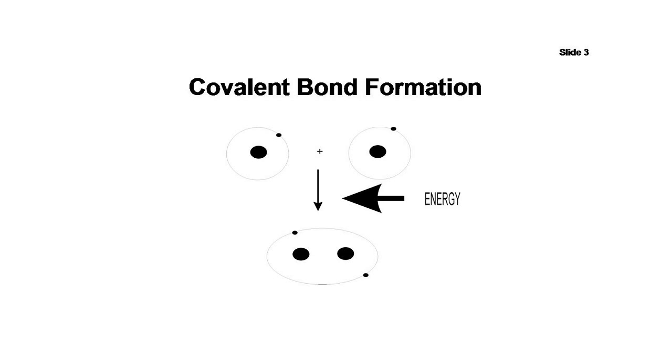But because nuclei are positively charged, electrons and nuclei attract each other. The further an electron is from the nucleus, the more energy it must have to overcome this attractive force. Therefore, for the electrons to get further away from the nuclei, they must have more energy, and so energy must be put into the system.